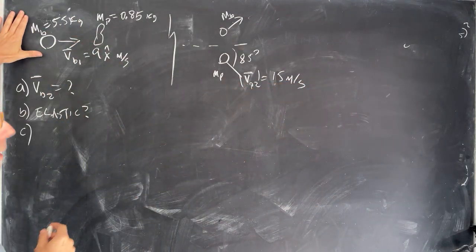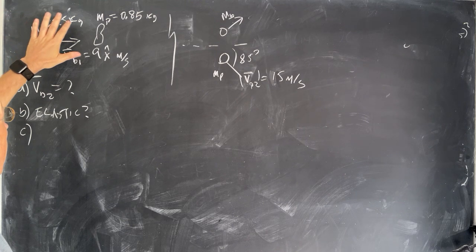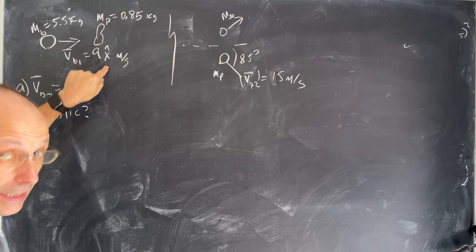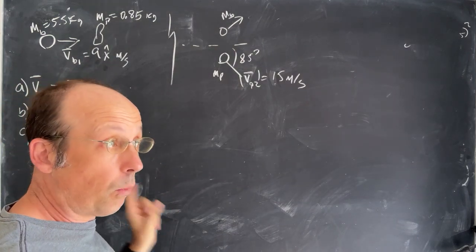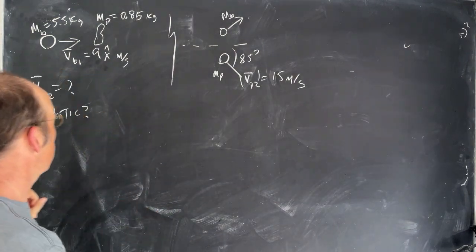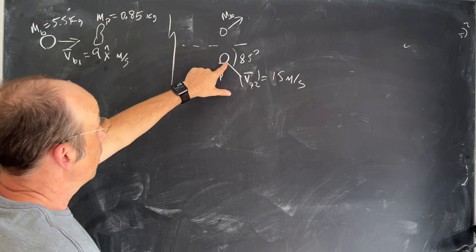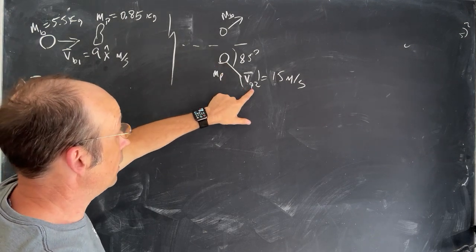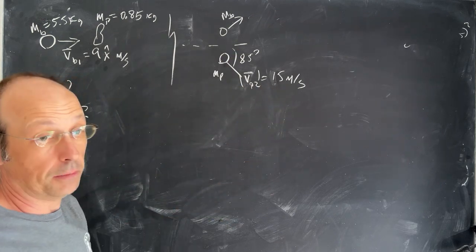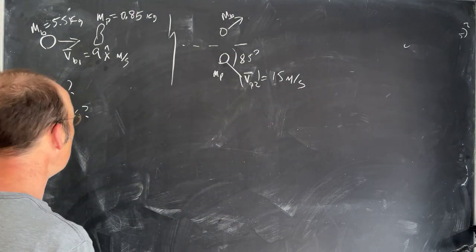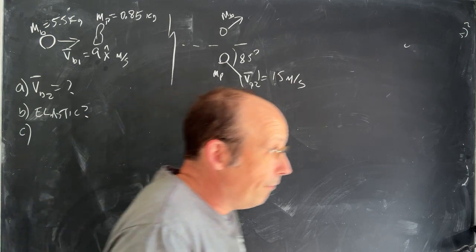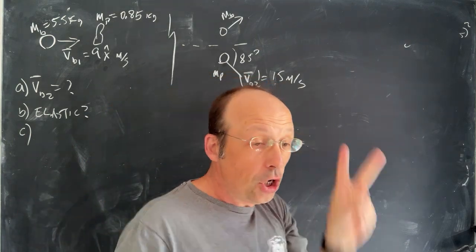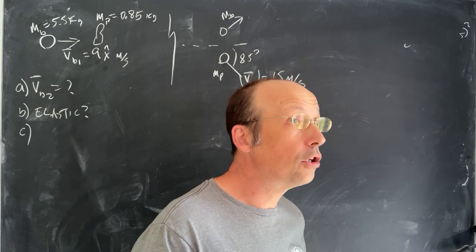The bowling ball has a mass of 5.5 kilograms and a velocity of 9 meters per second — I wrote this as a vector, and I'll show you why. The pin has a mass of 0.85 kilograms, and it's deflected at an 85 degree angle with 15 meters per second velocity. This is a conservation of momentum question — it's two-dimensional, so it gets a little tricky.